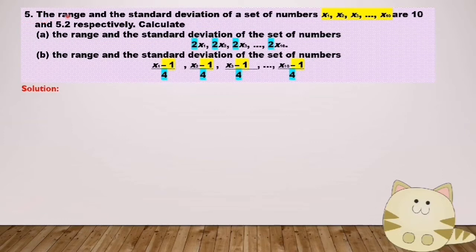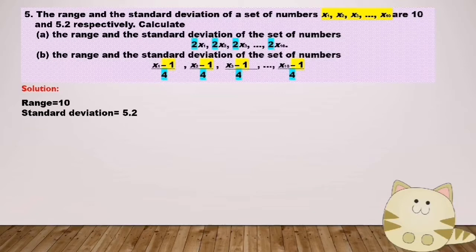Question number 5. The range and the standard deviation of a set of numbers S1, S2, S3 until S10 are 10 and 5.2 respectively. To answer this question, I will write the range and standard deviation first. So range equals 10 and standard deviation equals 5.2.